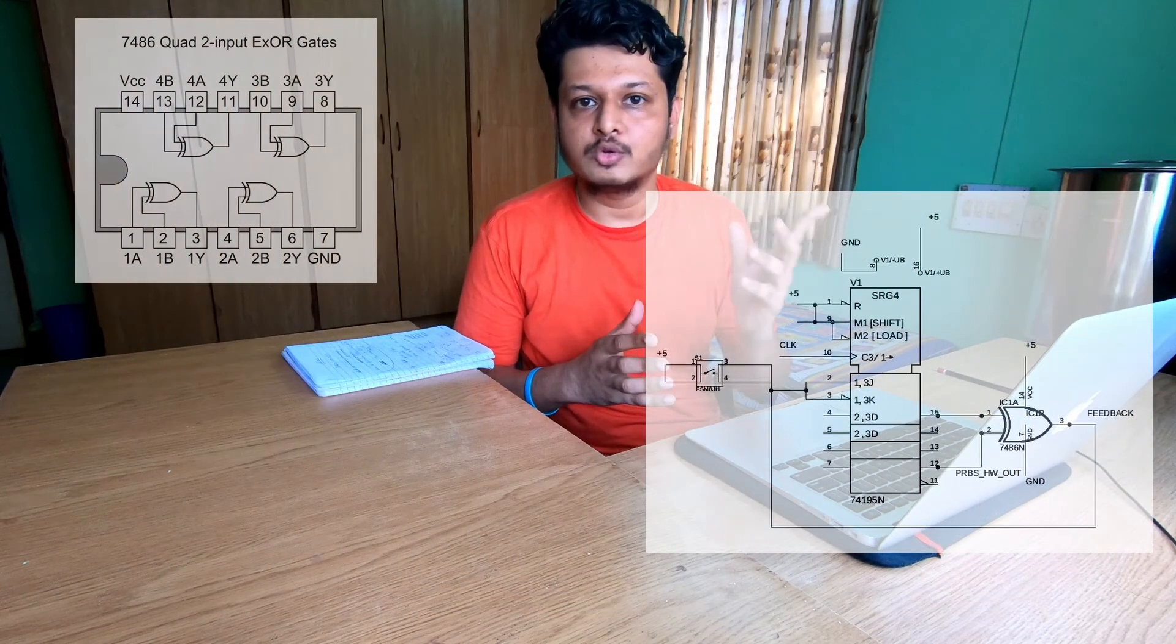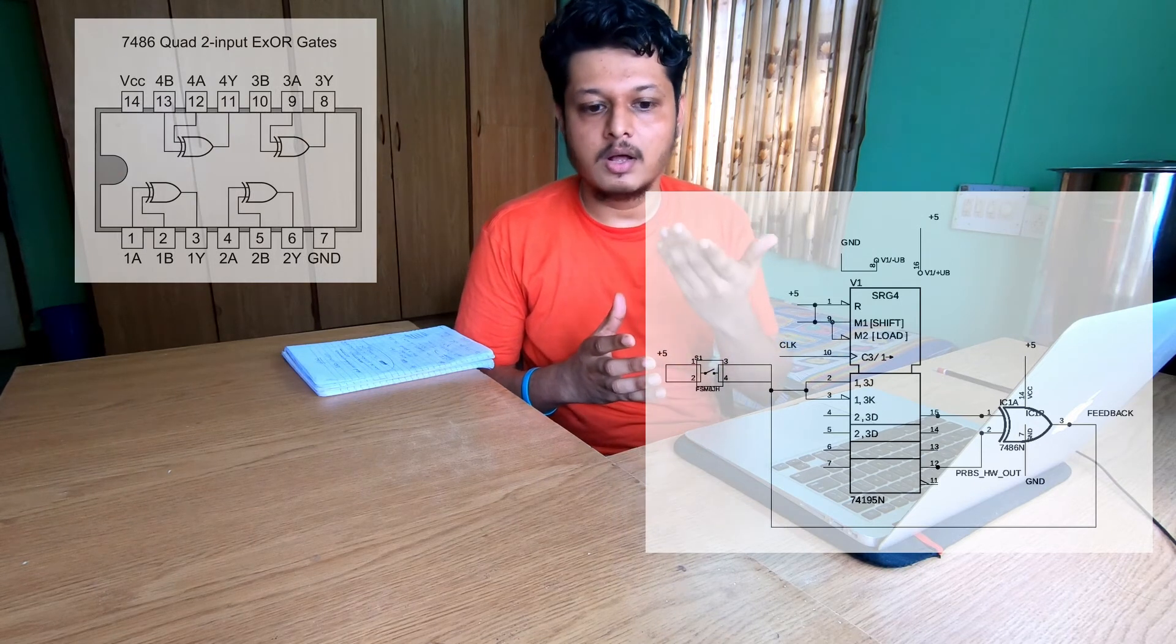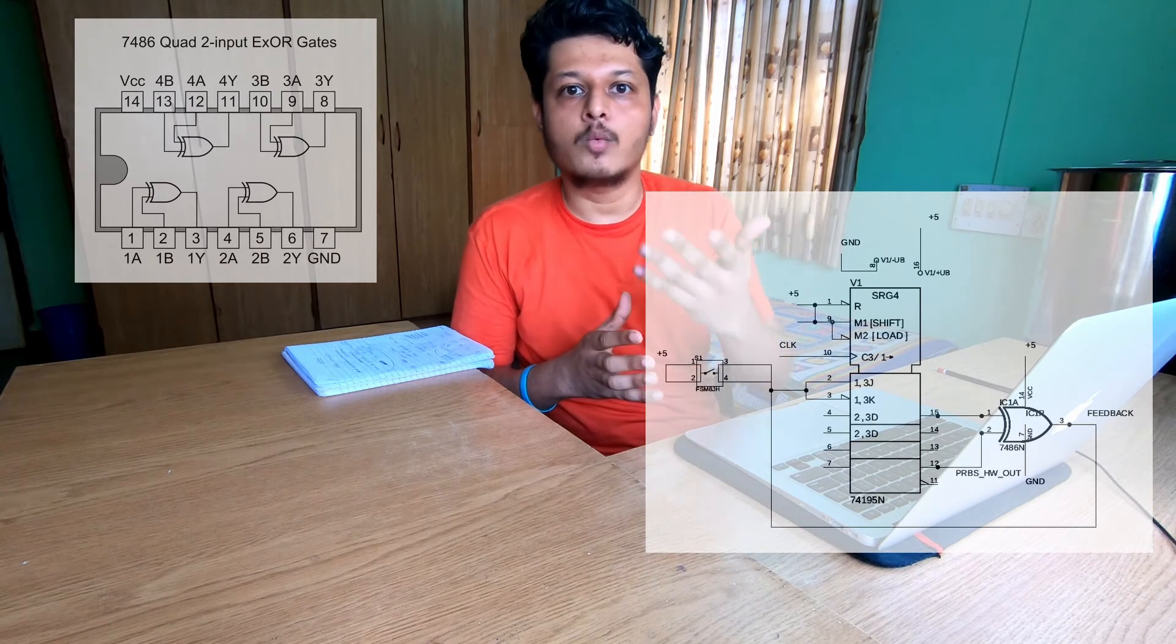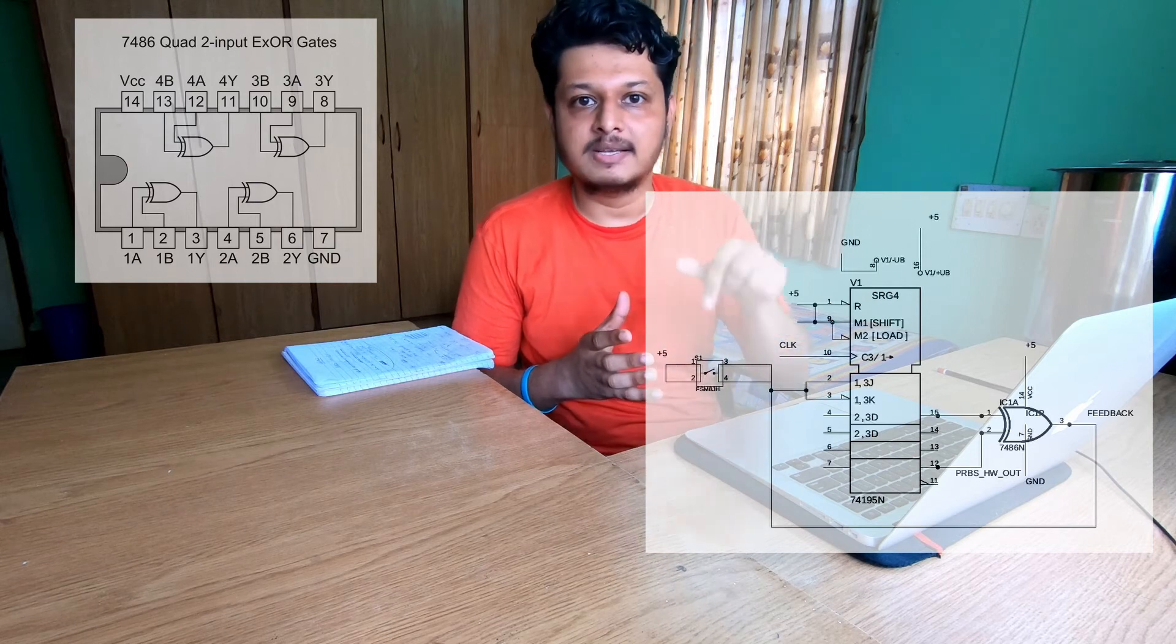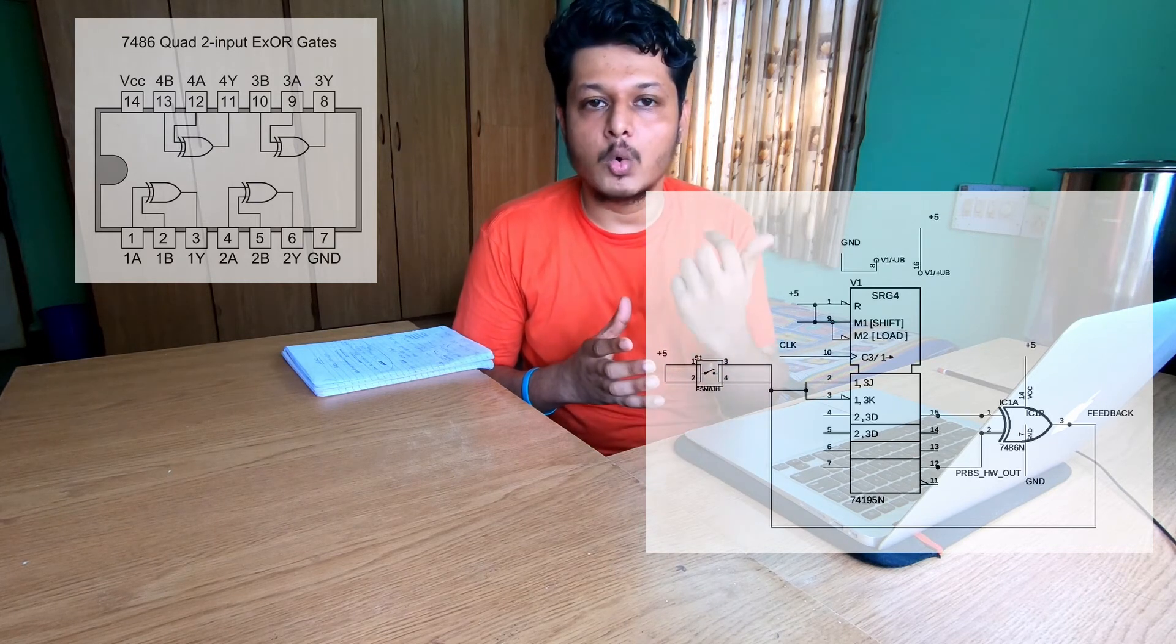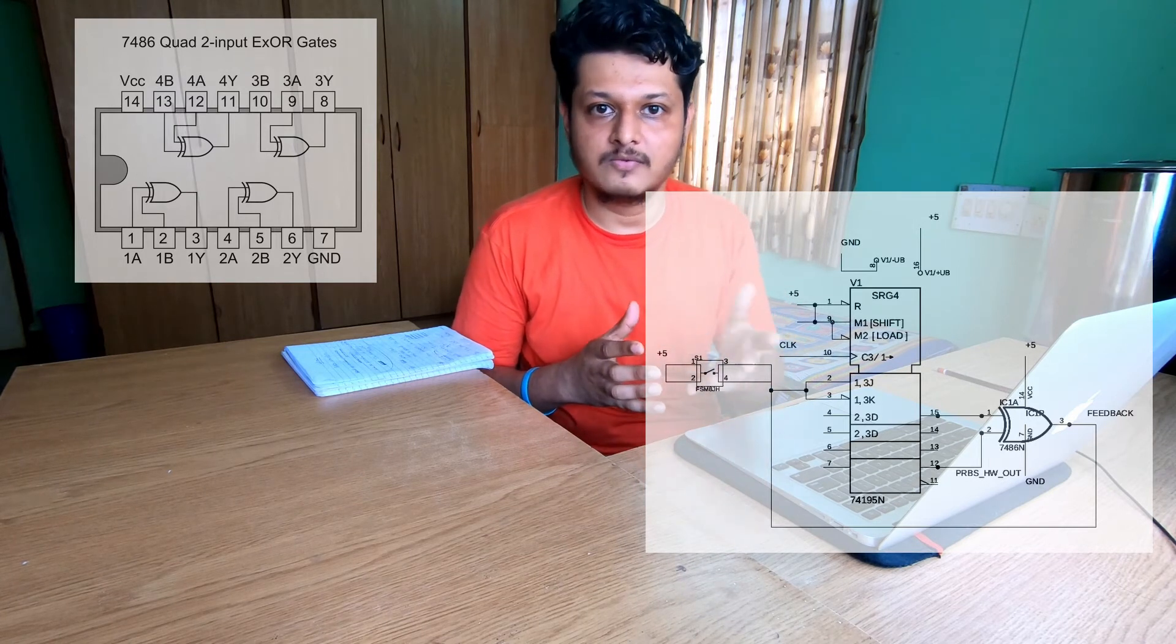You can see there is one pull-up switch provided in this circuit. It is used in the special case when the initial state is 0 0 0 0. In that case the output will be 0 all the time. To avoid that you can press this switch such that all ones are loaded into the shift register and then PRBS generation process starts forward.